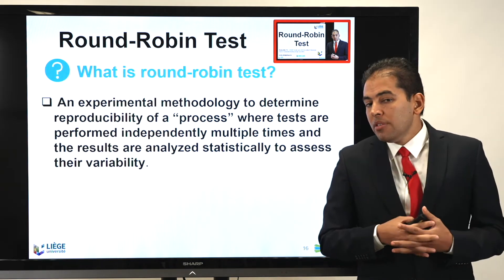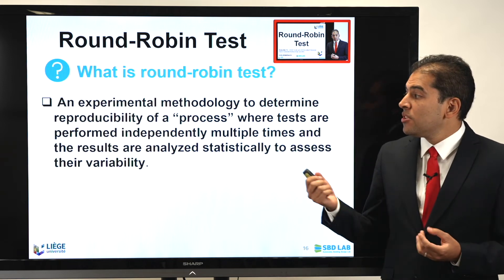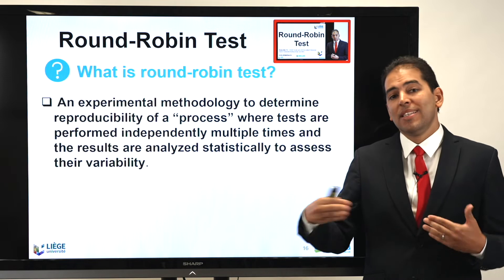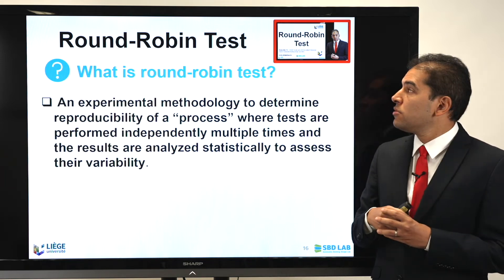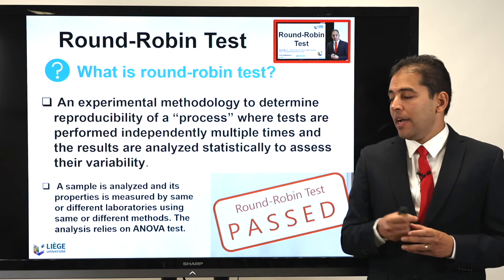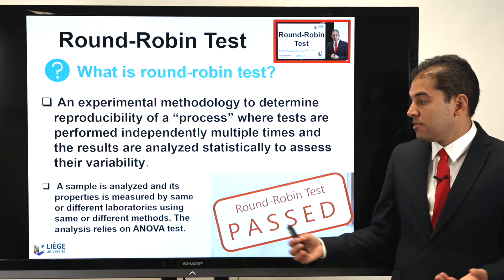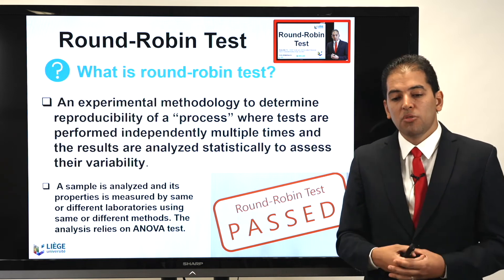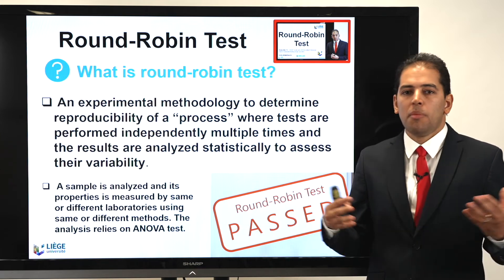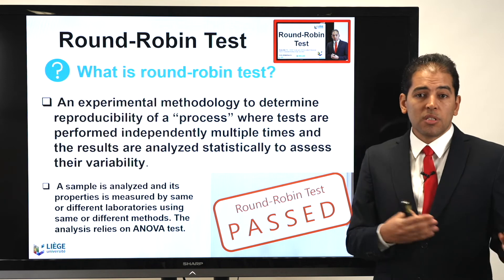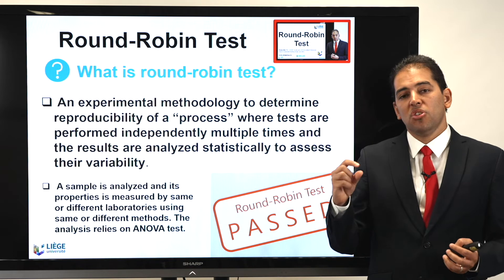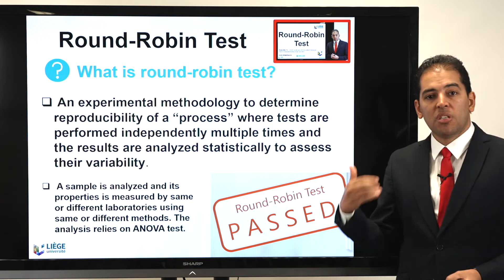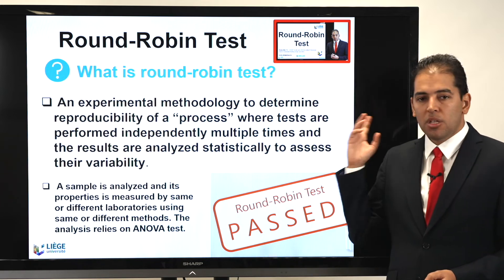You can also do a round-robin test. What is a round-robin test? It's an experimental methodology to determine reproducibility of a process where tests are performed independently multiple times and the results are analyzed statistically to assess their variability. A sample is analyzed and its properties are measured by the same or different laboratories using the same or different methods, and the analysis conducted is mainly analysis of variance — to make sure what the difference is between lab one, lab two, and lab three, which may be located in different countries or regions while using the same protocol. Once you have results within an acceptable margin of similarity, you can say your experiment passed the round-robin test.